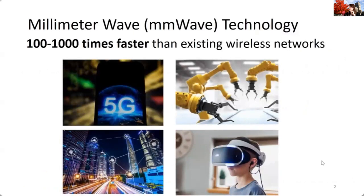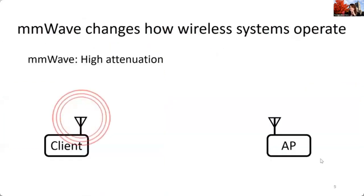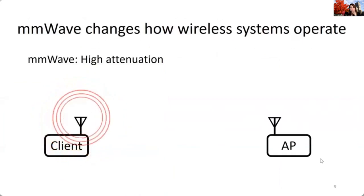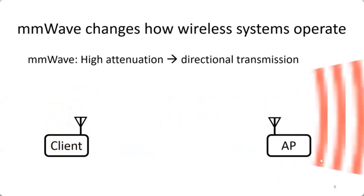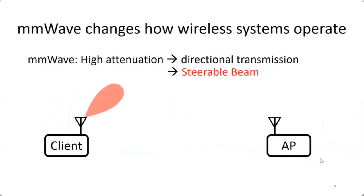However, existing millimeter wave networks consume so much power. There is also high propagation attenuation at millimeter wave, which changes the way the client communicates with access points. To establish communication with the access point, the client should focus its energy toward the AP rather than spreading it in every direction. This requires directional transmission, meaning the client has to create a narrow beam and steer it toward the access point.